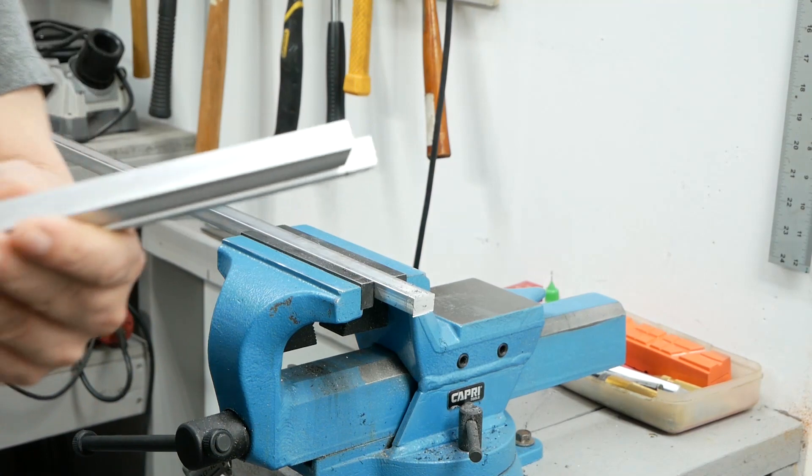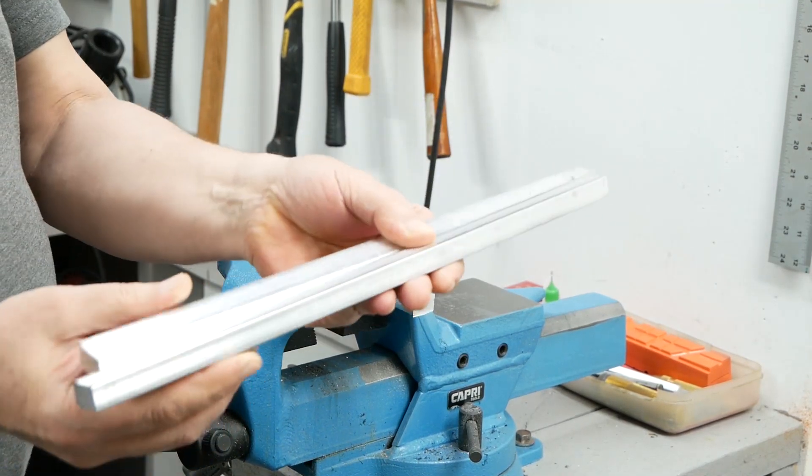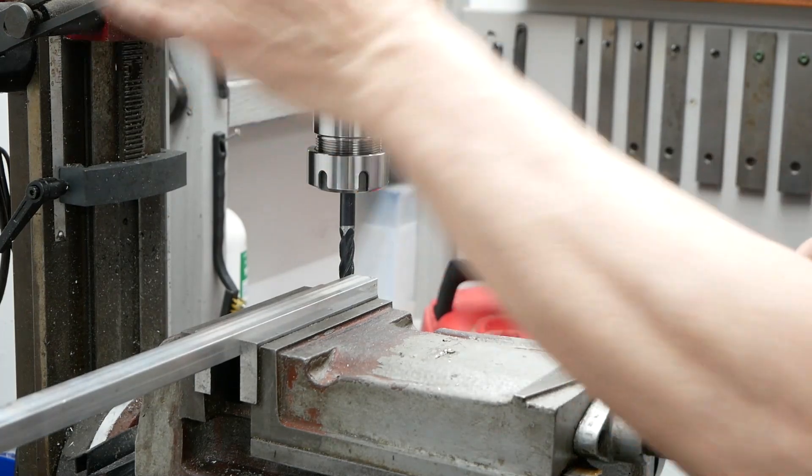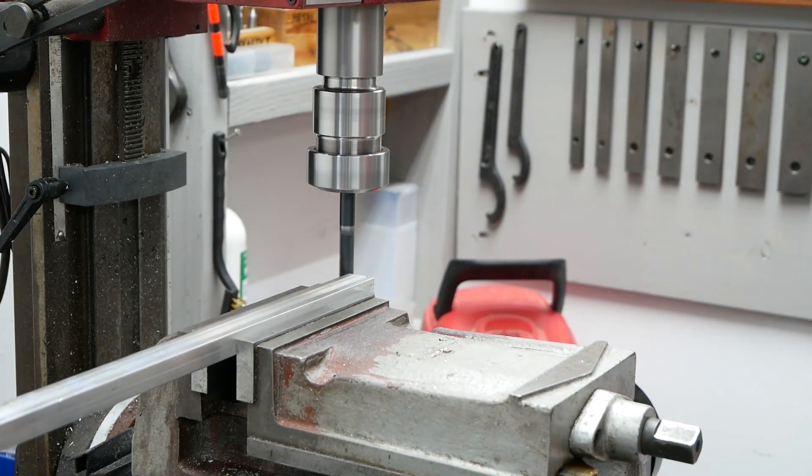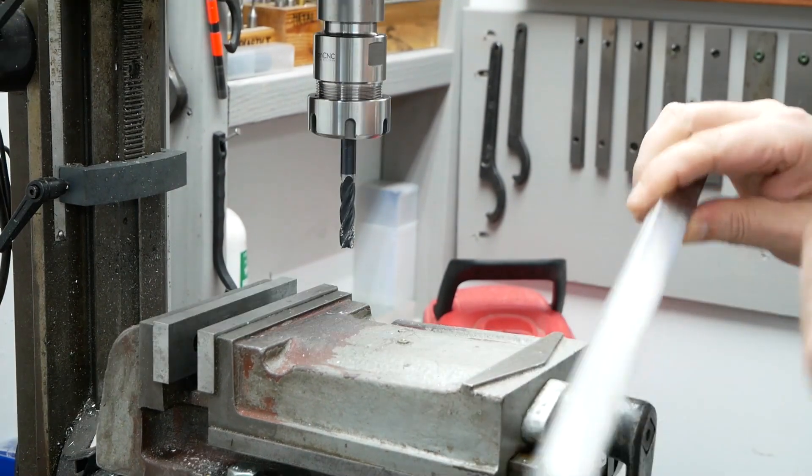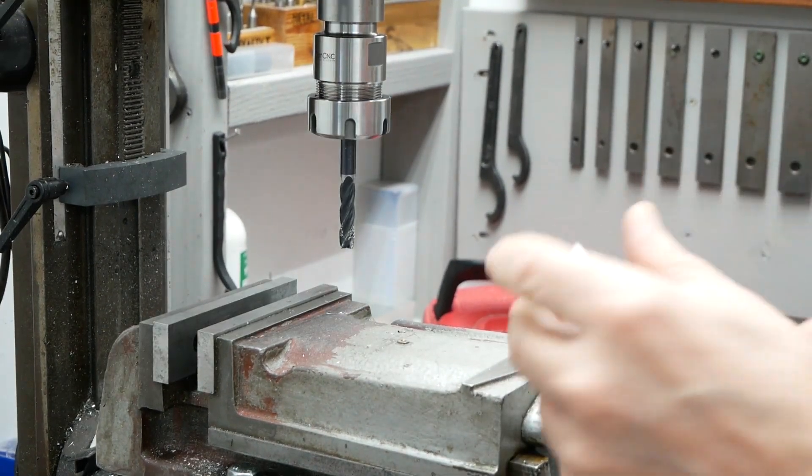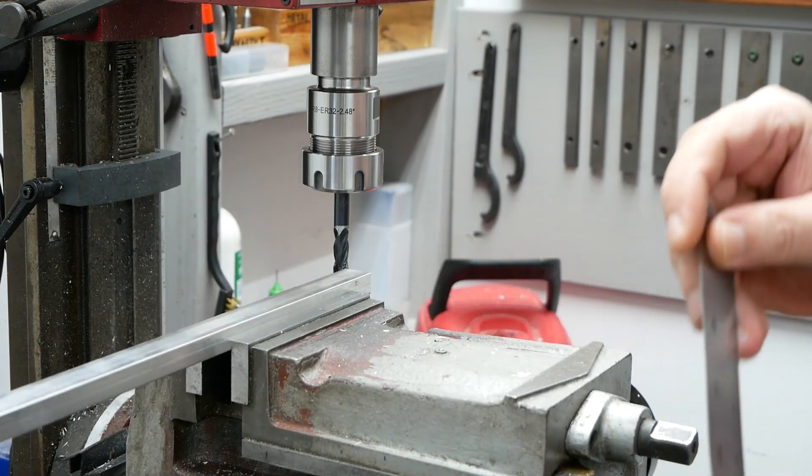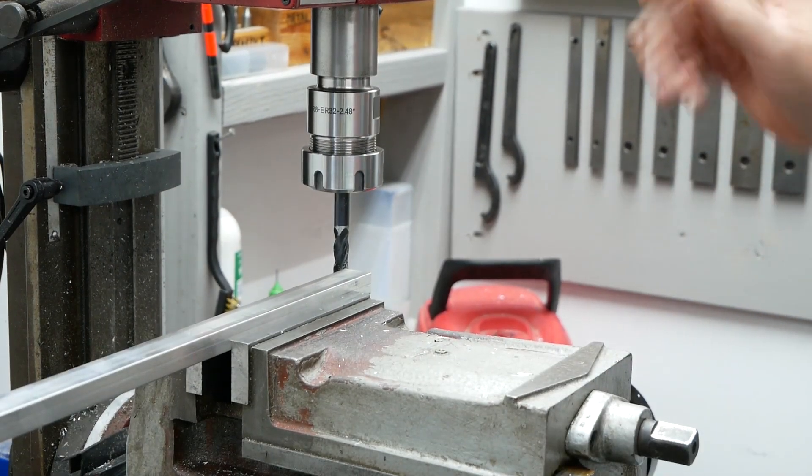Now we are going to square them up in the middle and then they will be slotted. All right, we are ready to square those up. Okay, now let's do the other end. Well that is looking pretty good.